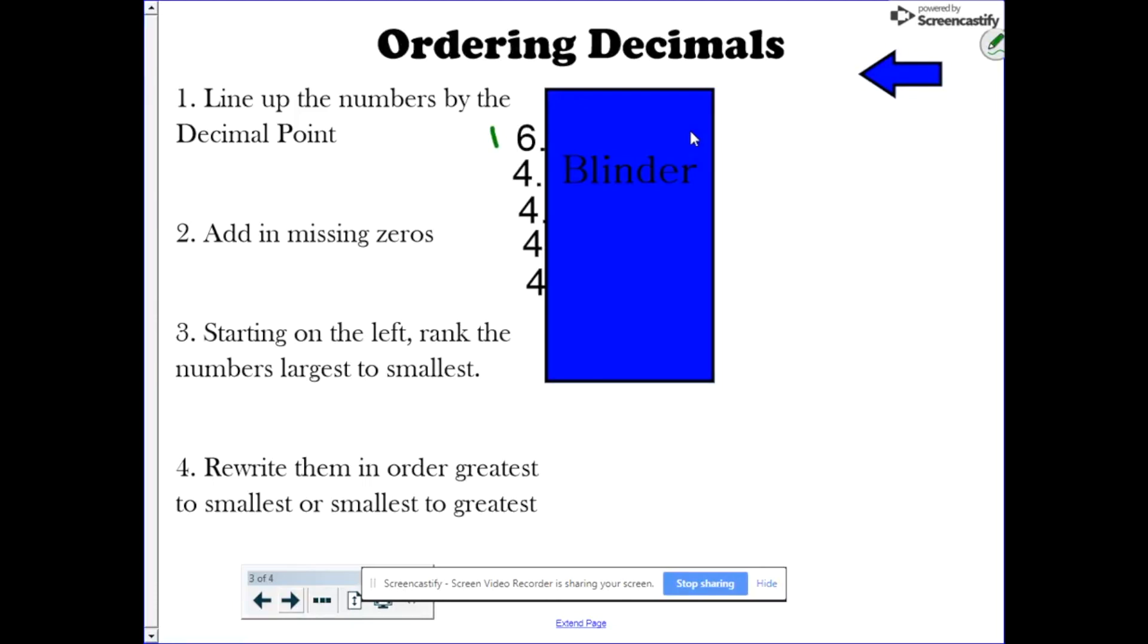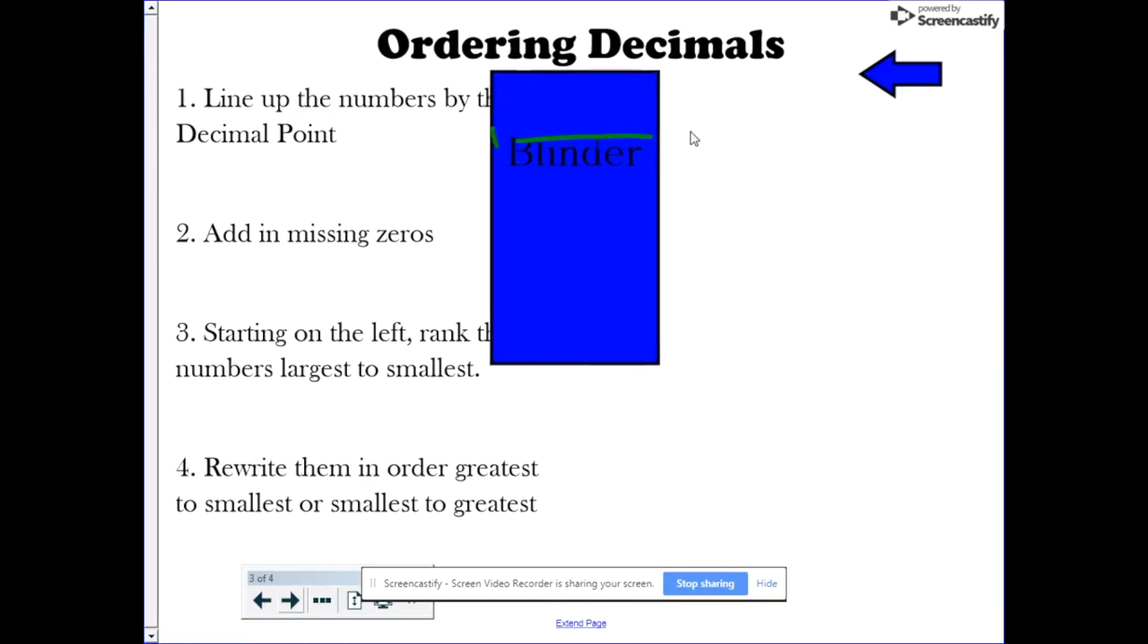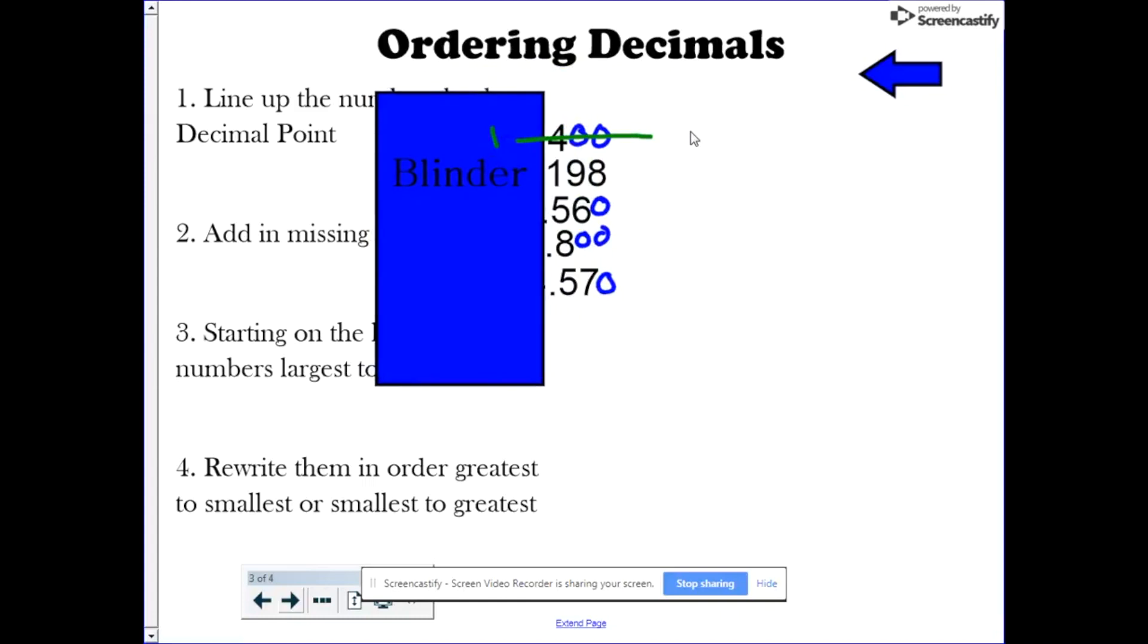One strategy to make sure we don't accidentally reuse this number is to cross it out. Once you've ranked the number, you cross it out. Next, let's look at the decimals. I'm going to put a 1 over here as well, just because it's easier to see. Then, we're going to look at the other numbers. We have 198, 560, 800, and 570. My next largest number is the 800, so I'm going to write a 2 next to there.